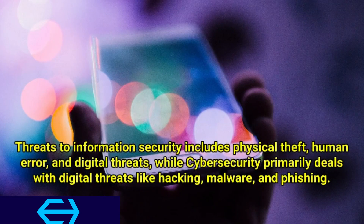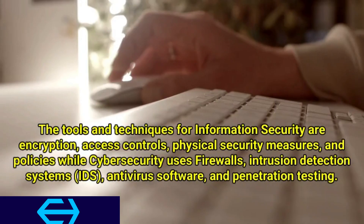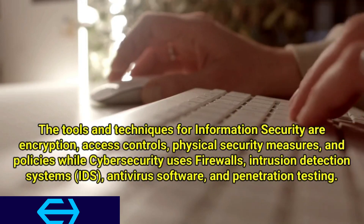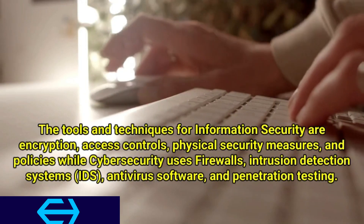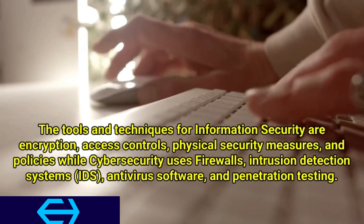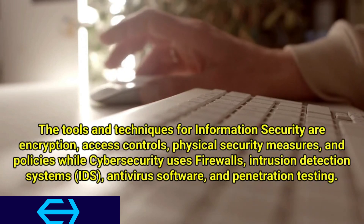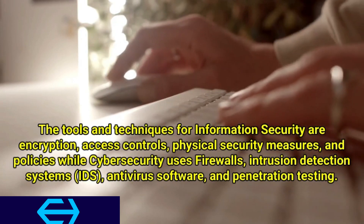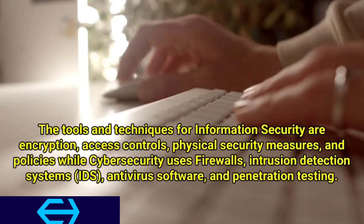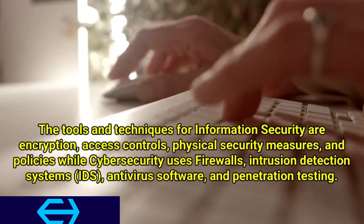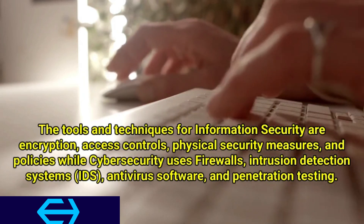Threats to information security include physical theft, human error, and digital threats, while cybersecurity primarily deals with digital threats like hacking, malware, and phishing. The tools and techniques for information security are encryption, access controls, physical security measures, and policies, while cybersecurity uses firewalls, intrusion detection systems (IDS), antivirus software, and penetration testing.